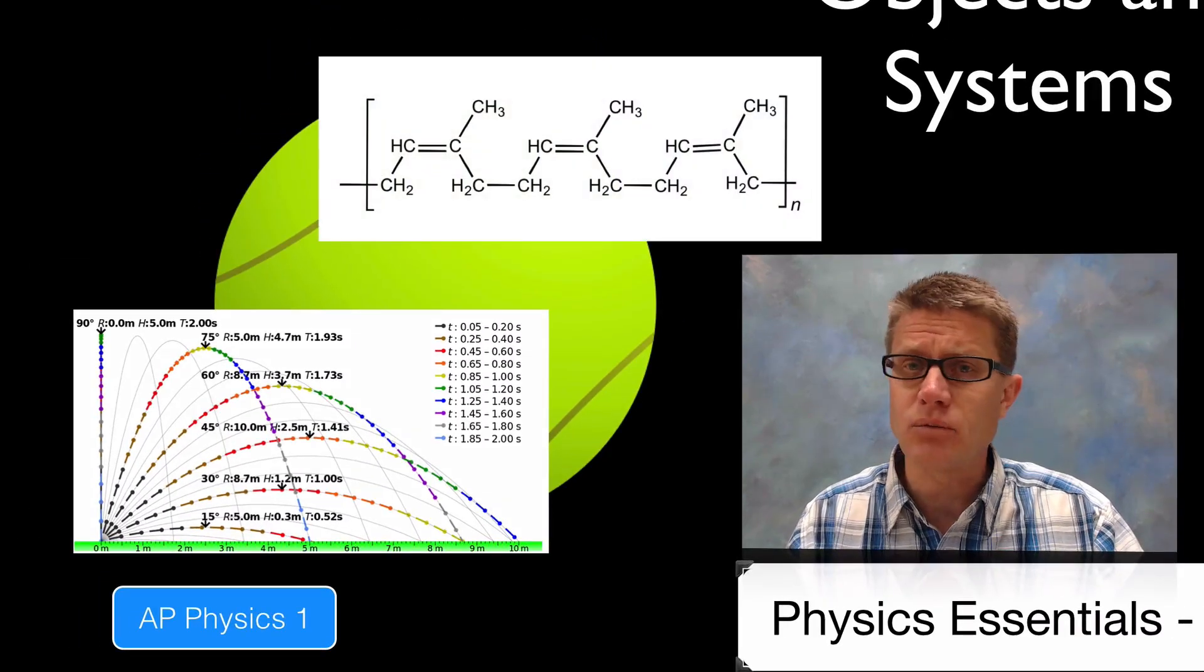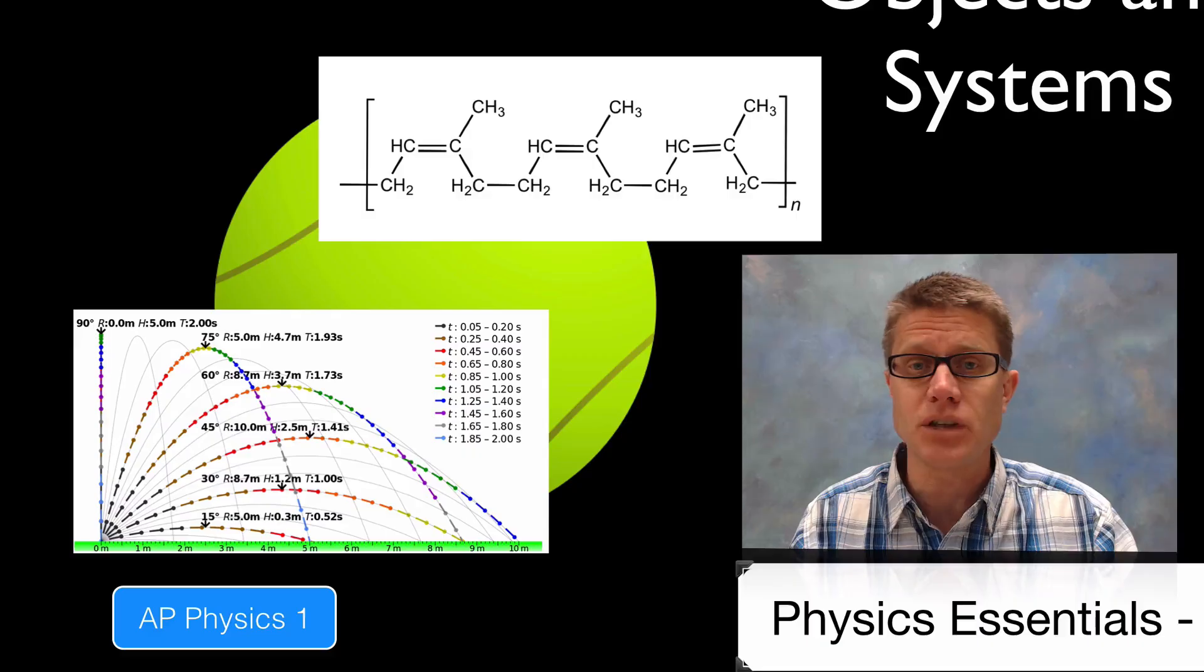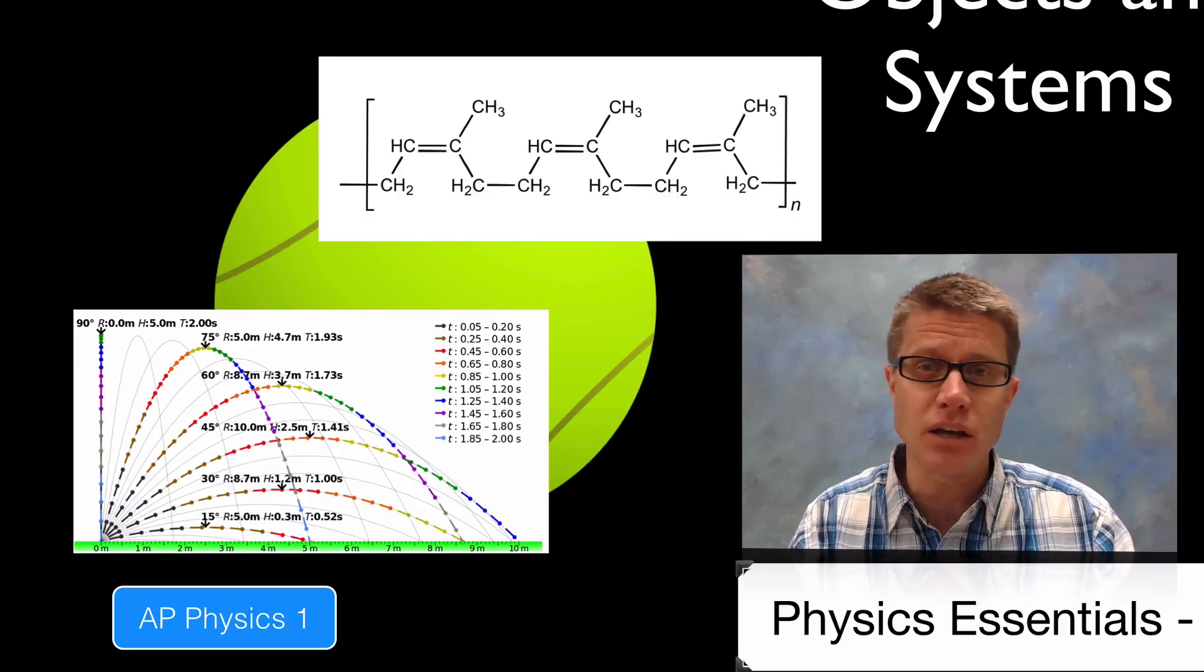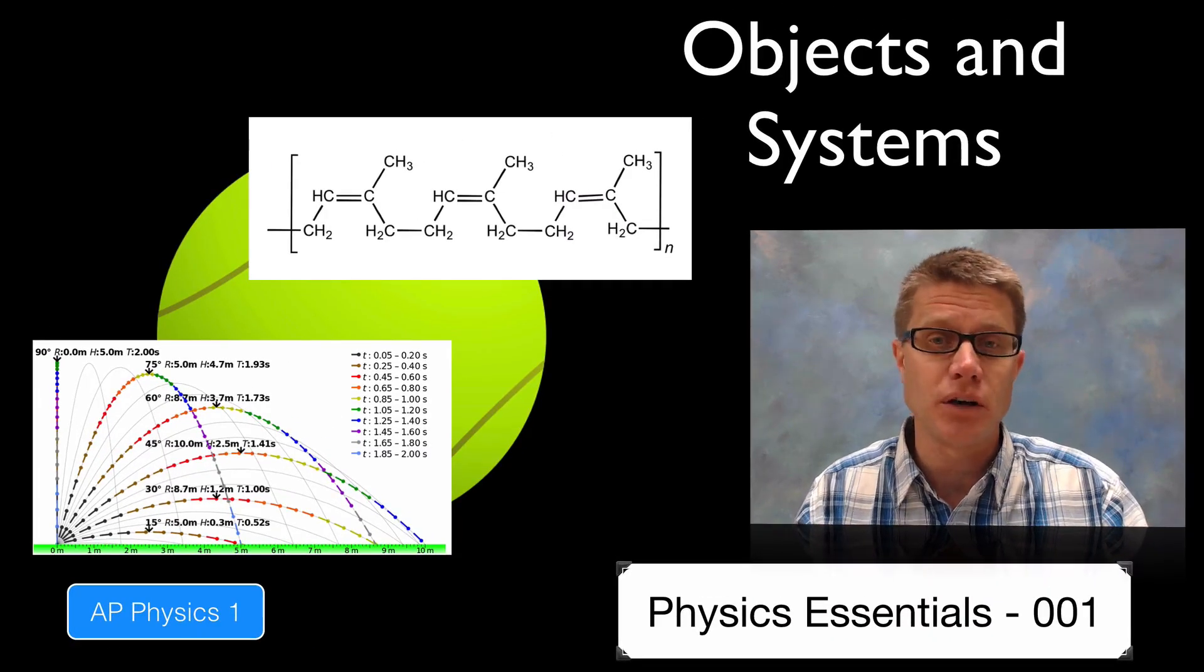However if we were to look at the synthetic rubber that makes up the tennis ball and how its elasticity changes at different temperatures, then it is more important to treat that as a system made up of a bunch of atoms and understanding how those atoms behave at different temperatures would be relevant to the problem that we are trying to solve.